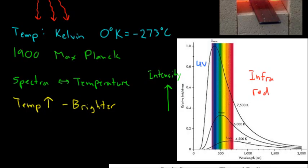So this bottom line is 4,500 degrees Kelvin, this middle line is 6,000 degrees Kelvin, and this top line is 7,500 degrees Kelvin. So we notice that as the temperature increases, the brightness of the object increases dramatically.